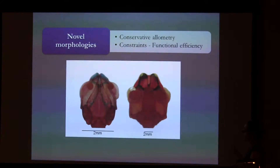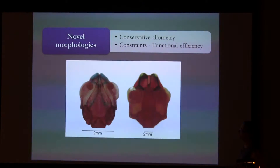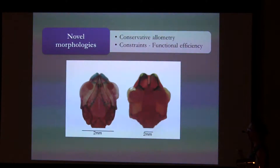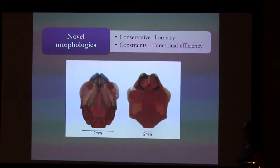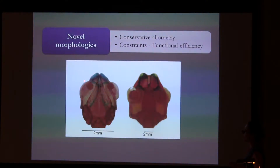It has been repeatedly observed that miniaturized tetrapods tend to have novel morphologies. These novel morphologies arise from the extrapolation of conservative allometry of the clade to a very tiny size, together with new constraints to maintain functional efficiency, such as feeding and hearing. Particularly in tetrapods, small miniaturized species tend to have proportionally huge brain cases and huge optic capsules because of these functional constraints.